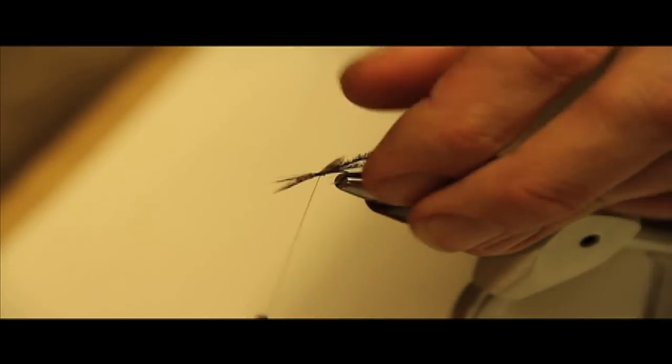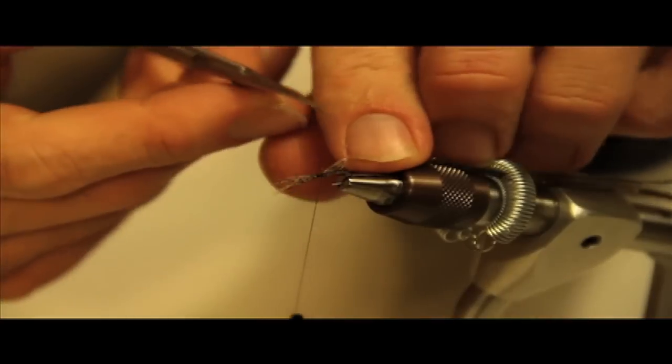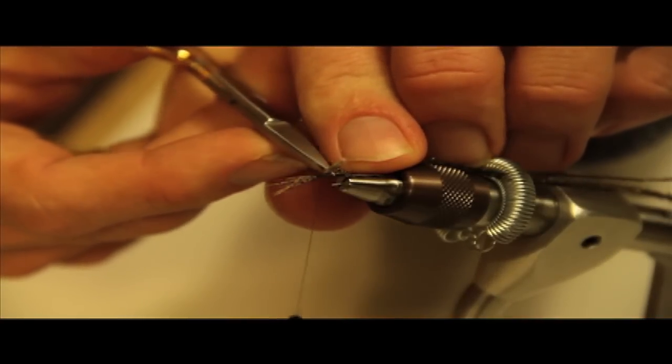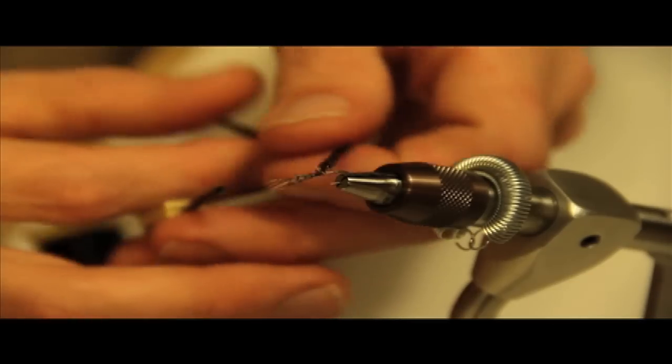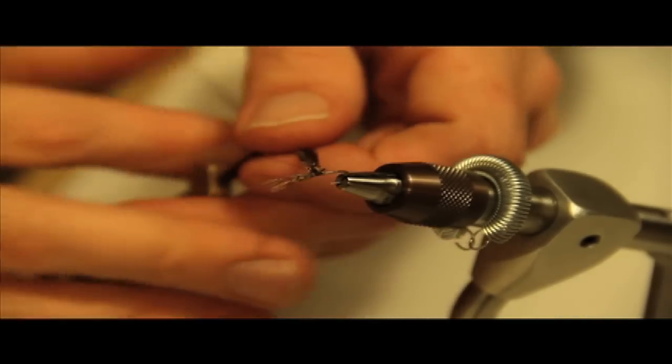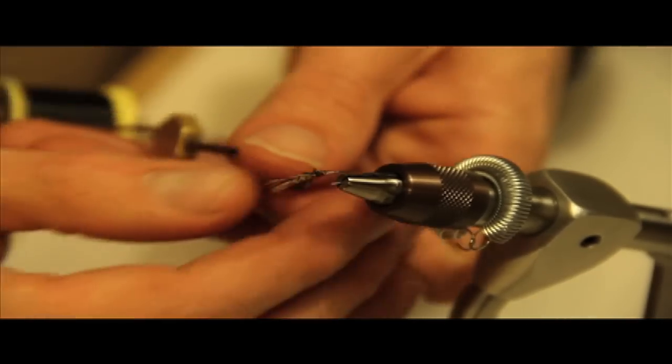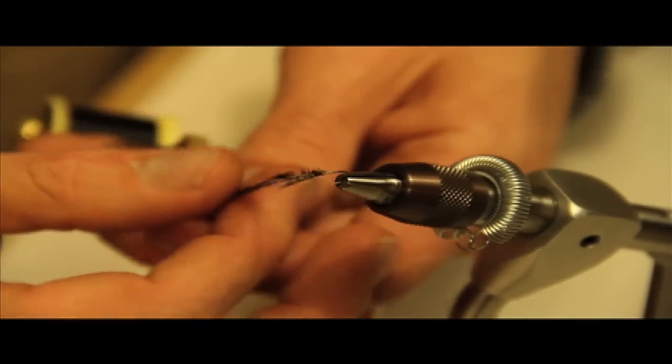The reason we're going to do this is to be able to downsize this partridge hackle a little bit. Make a couple wraps. I'm going to trim the butts off here. We'll hide those. Okay, keeping it simple here, just like we did with the Griffith's Gnat, we're going to go around the peacock about four times with the thread.